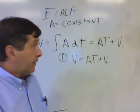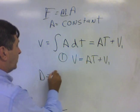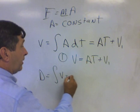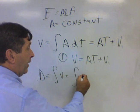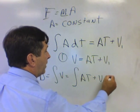The second one is we know that position or distance equals the integral of velocity, which is equal to the integral of At plus v initial dt.